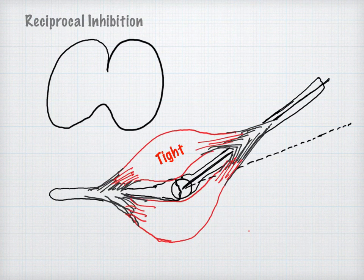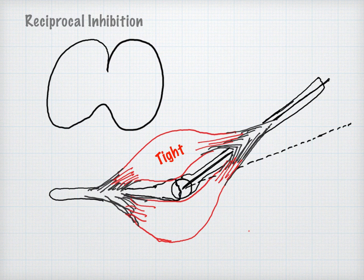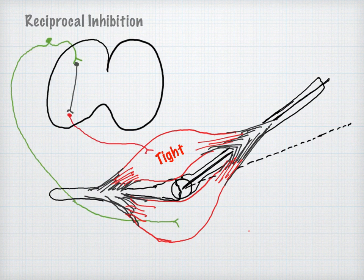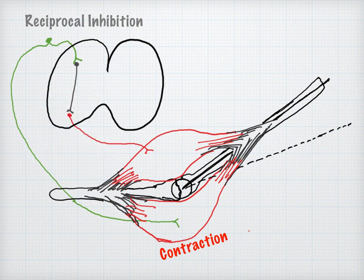The fourth mechanism is reciprocal inhibition. If the tight muscle cannot be adequately contracted for some reason, that muscle's antagonistic group can be utilized. Contraction initiated of the agonist muscle simultaneously initiates a reflex relaxation of the antagonistic muscle group.